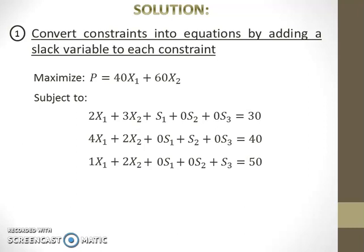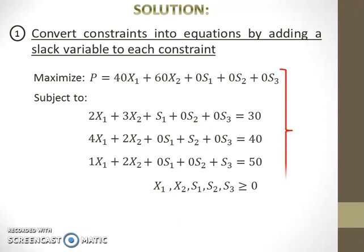Put also slack 1, slack 2, and slack 3 with 0 coefficients in the objective function. Write the non-negativity constraints for the model. Now, this new form of model is called standard form of a linear programming model.